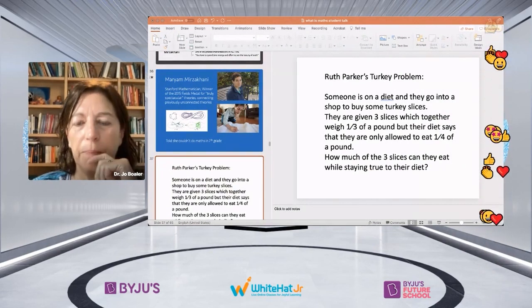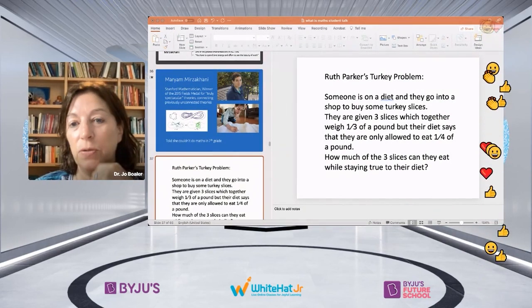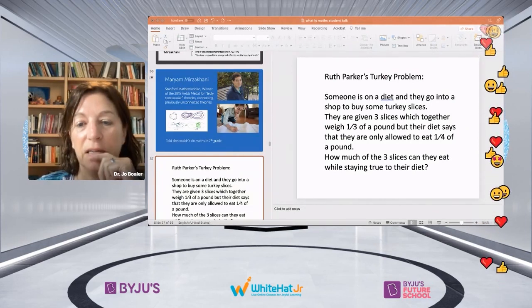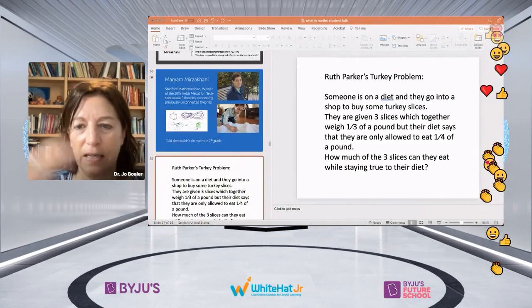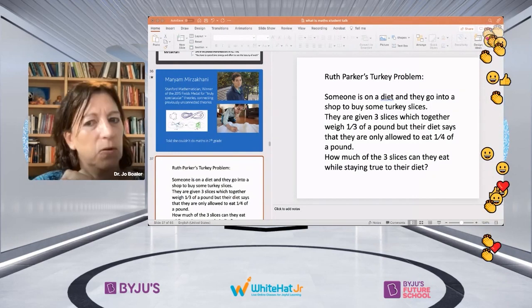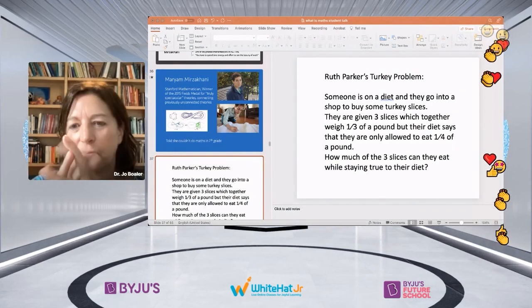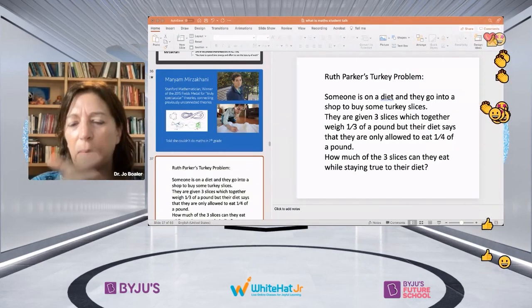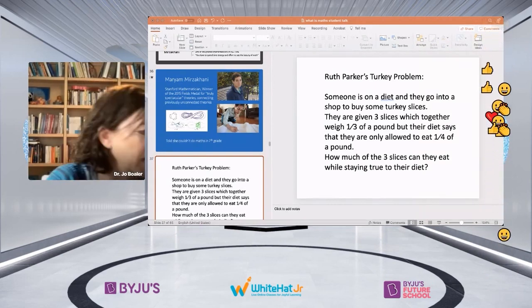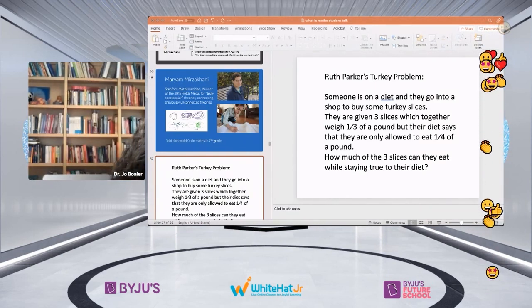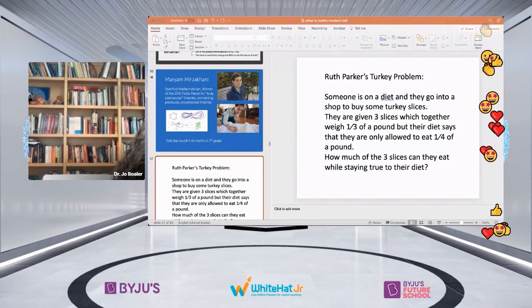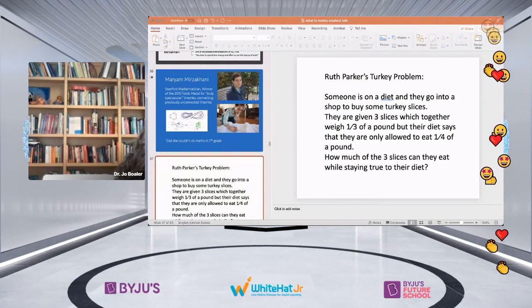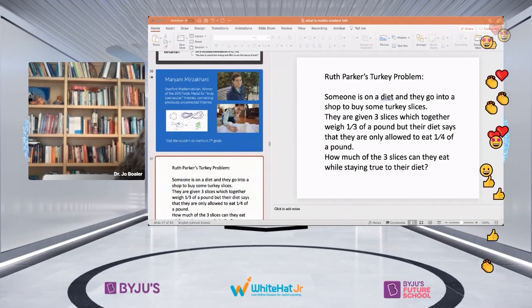It's called the turkey problem, comes from my friend Ruth Parker. And this is the problem: someone's on a diet and they go into a shop to buy turkey slices. They're given three slices which weigh a third of a pound, but their diet says they're only allowed a quarter of a pound. How much of the three slices can they eat? So that's a hard one. I'm going to give you a bit of time to think about that one. And I can see some people saying, yeah, it's hard. Is it one? Is it one and a half?